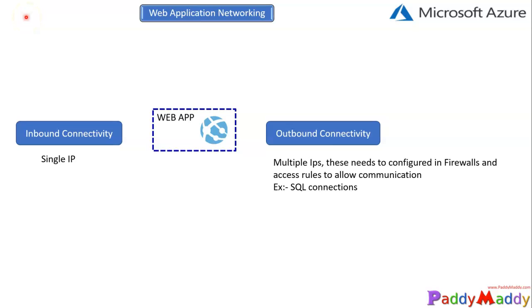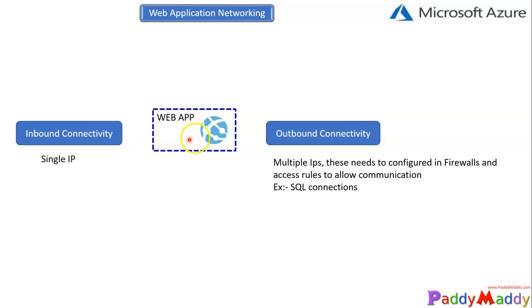In this lecture we're going to learn about web applications networking connectivity. When you create your web application, you will have two things: one would be the inbound connectivity, where you will be actually accessing the web application, and the outbound connection — that's when the web application has to go and communicate with another virtual machine or maybe with a SQL server.